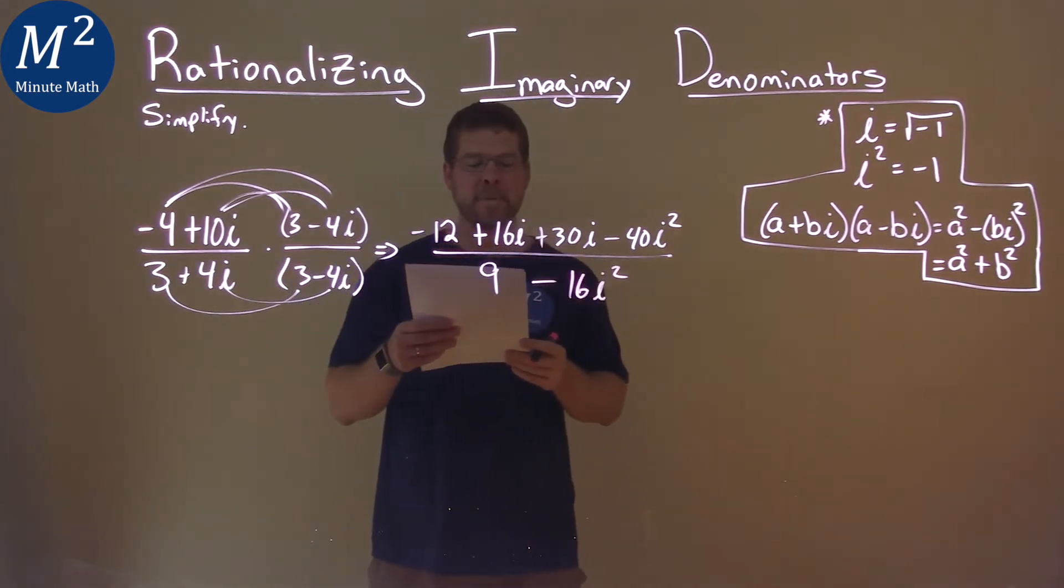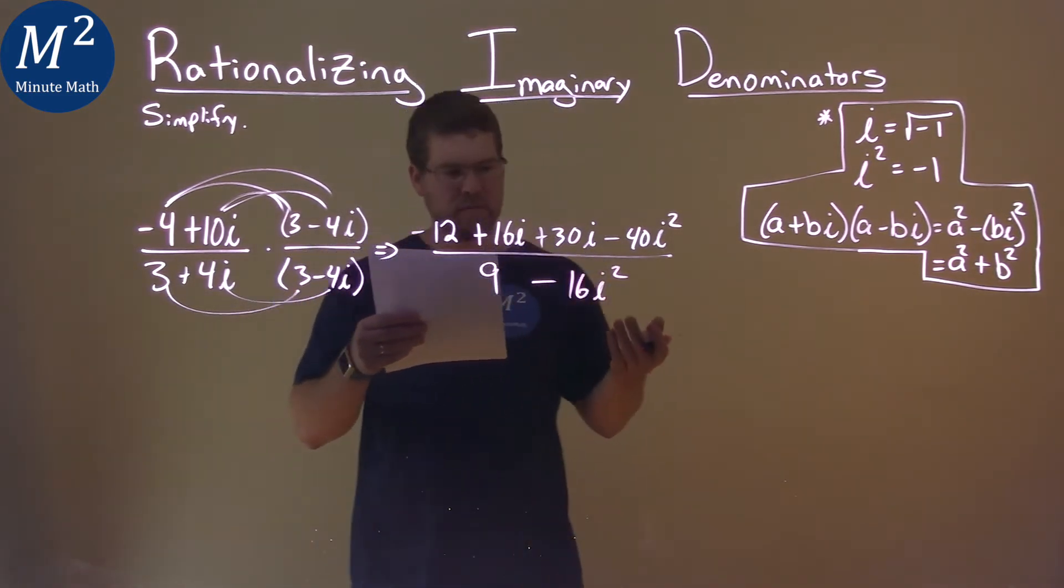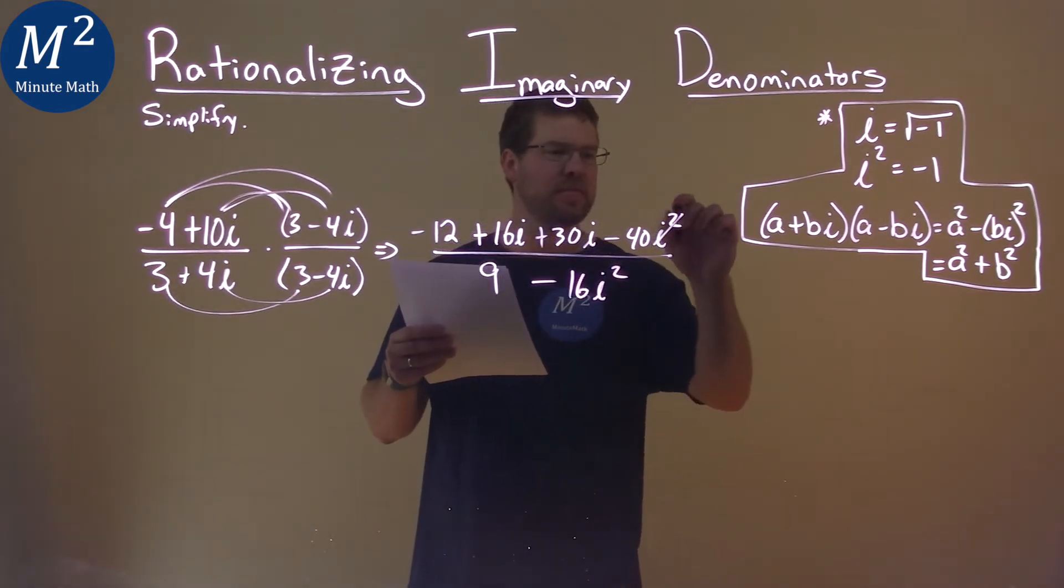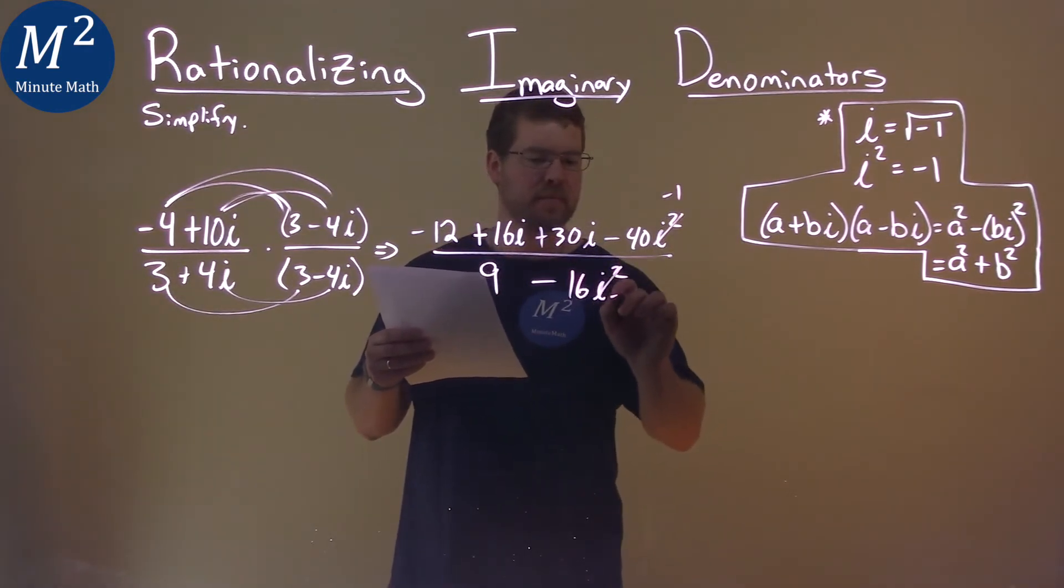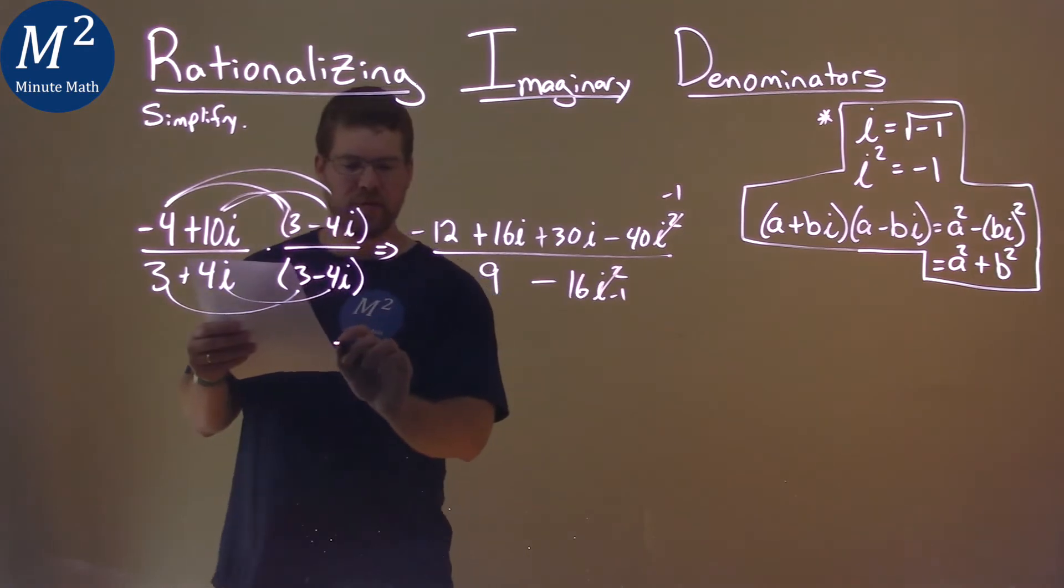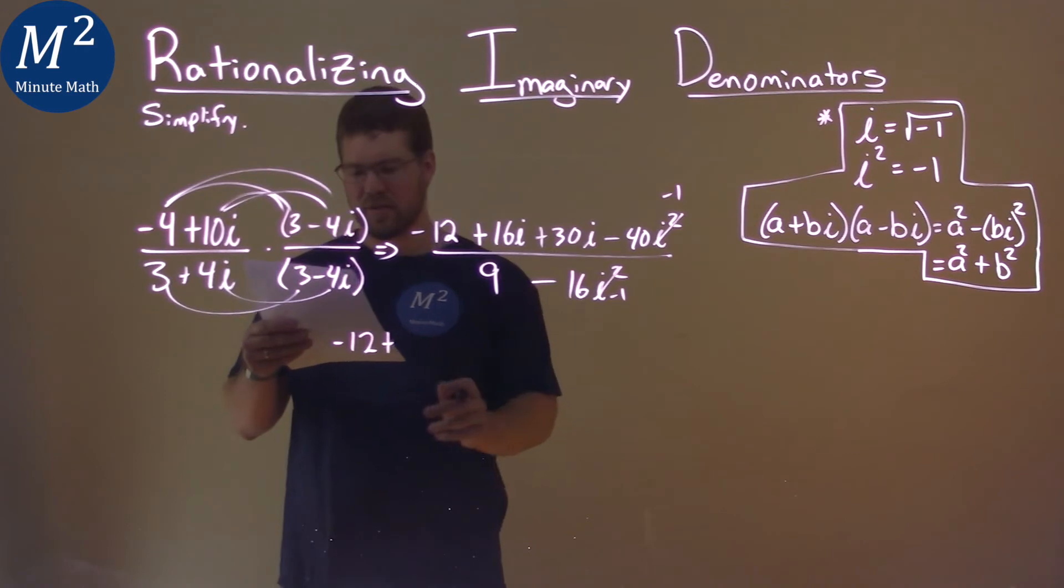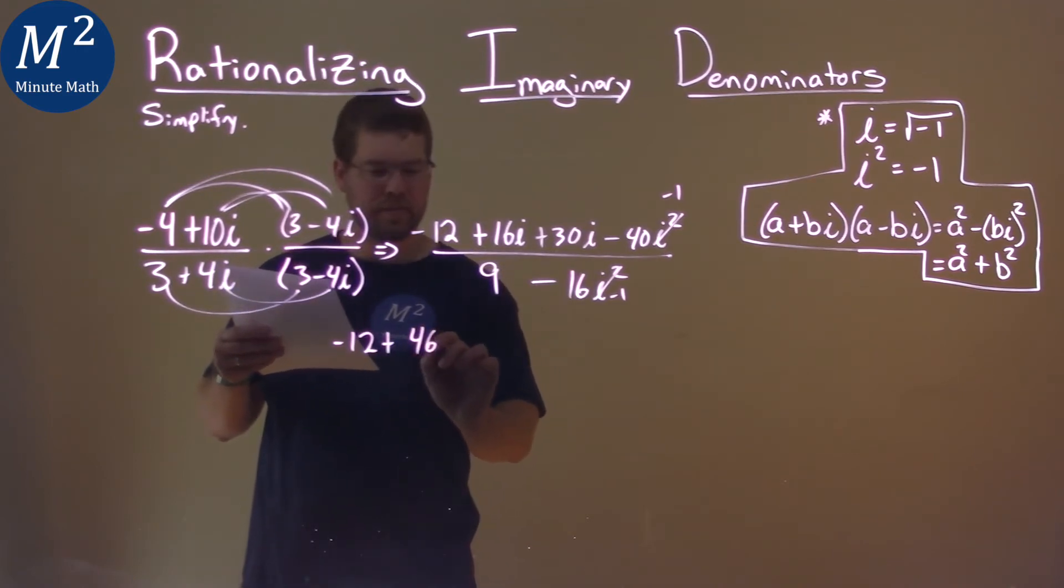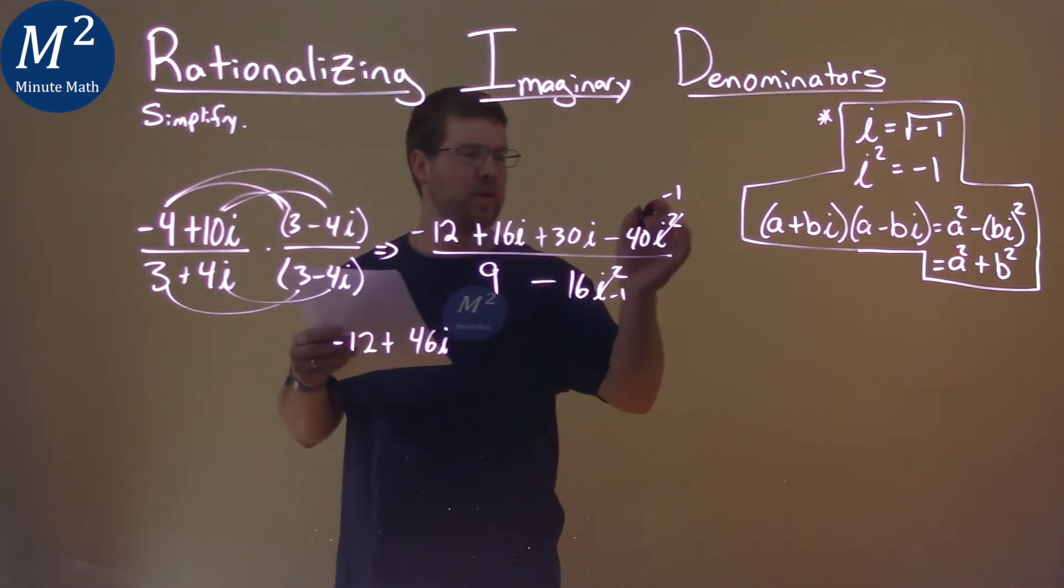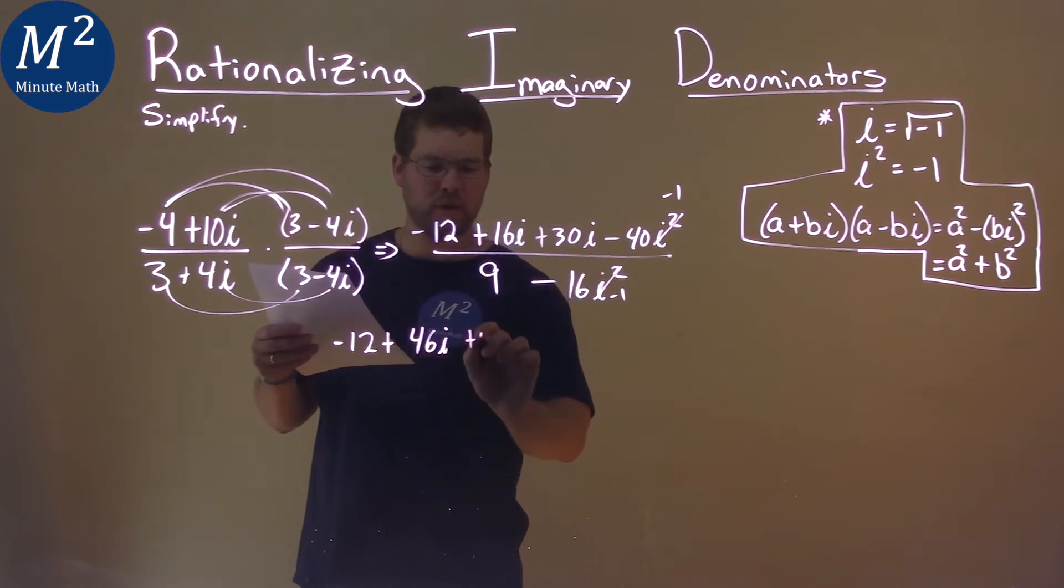Okay, well what do we know about i squared? i squared is equal to negative 1. So if you rewrite this, we have negative 12 plus, well we can add our like terms, 16i plus 30i is 46i, and then negative 1 times a negative, we have a positive 40 here.